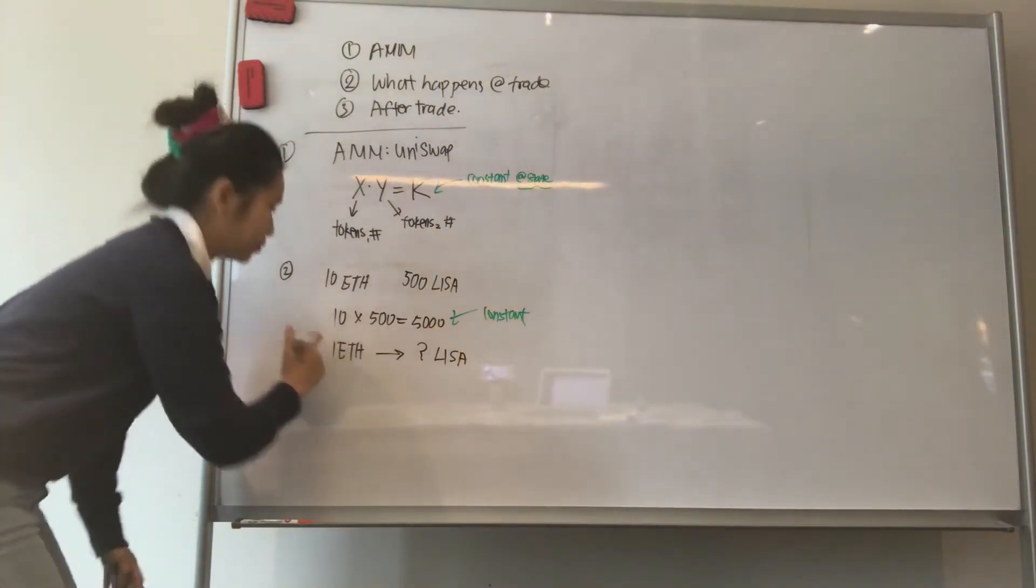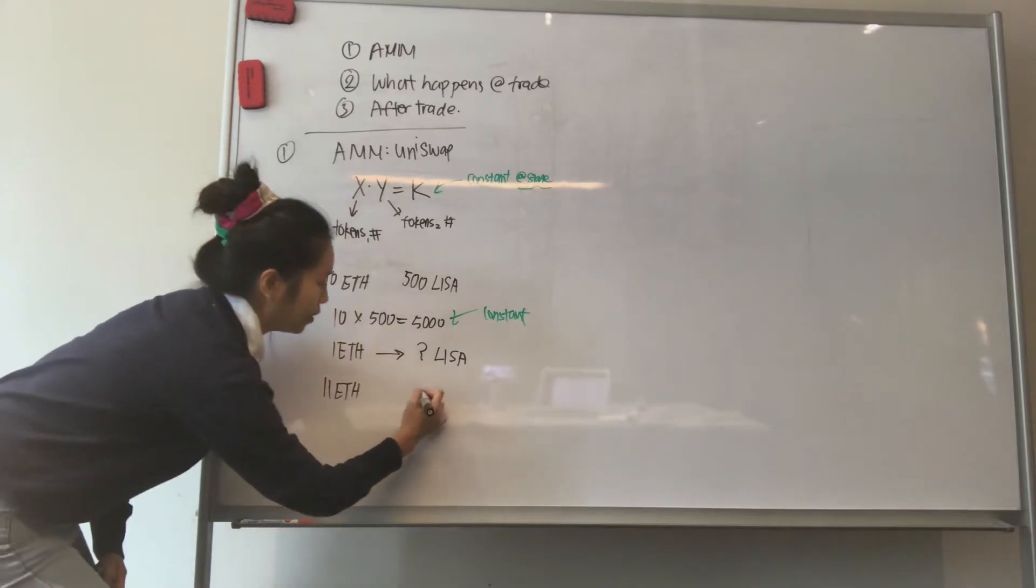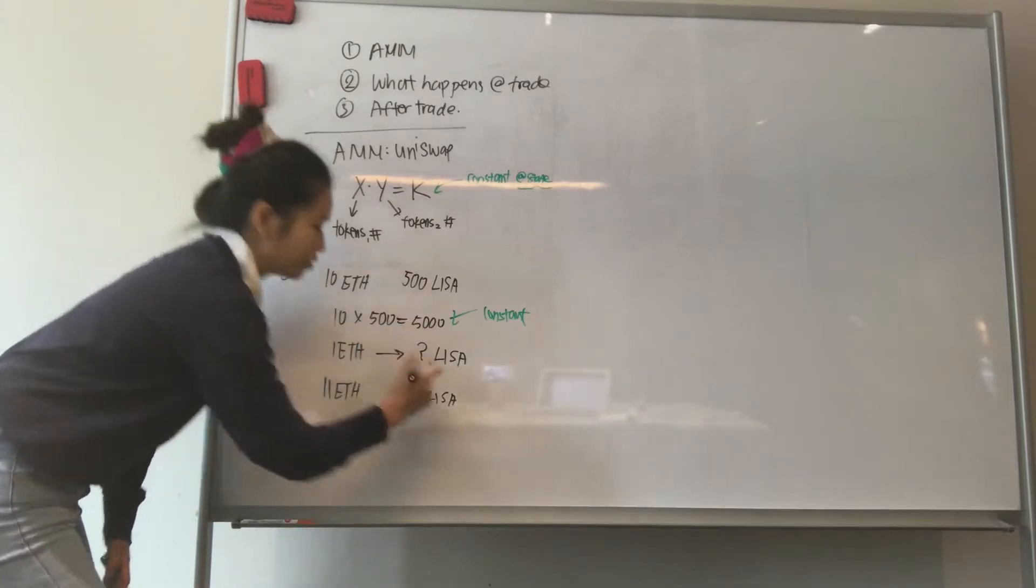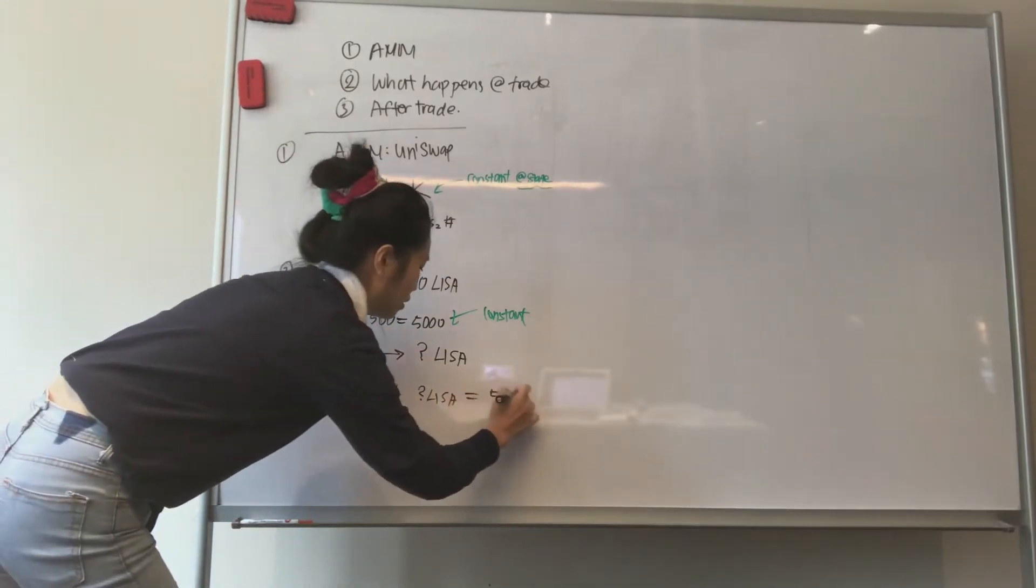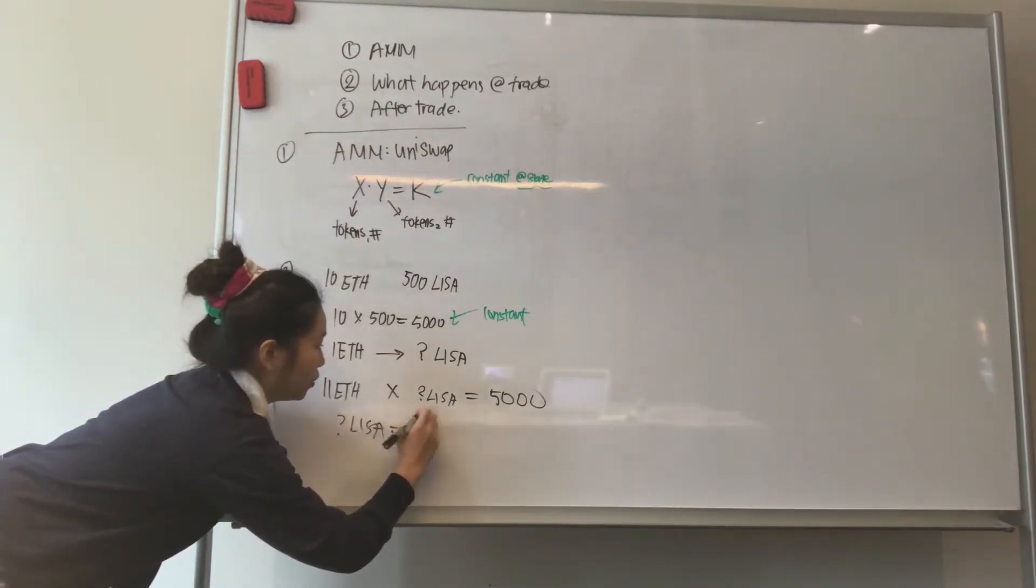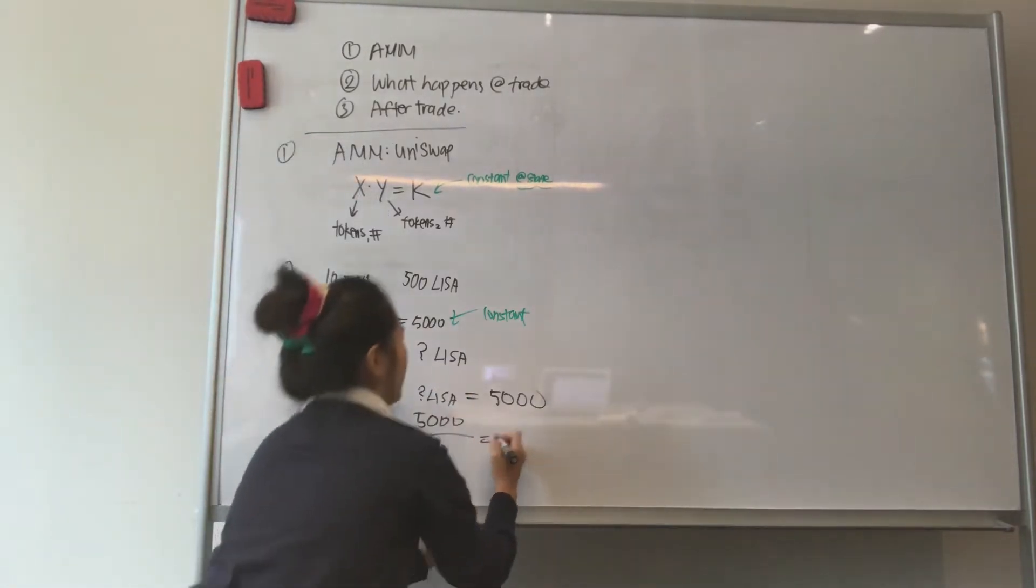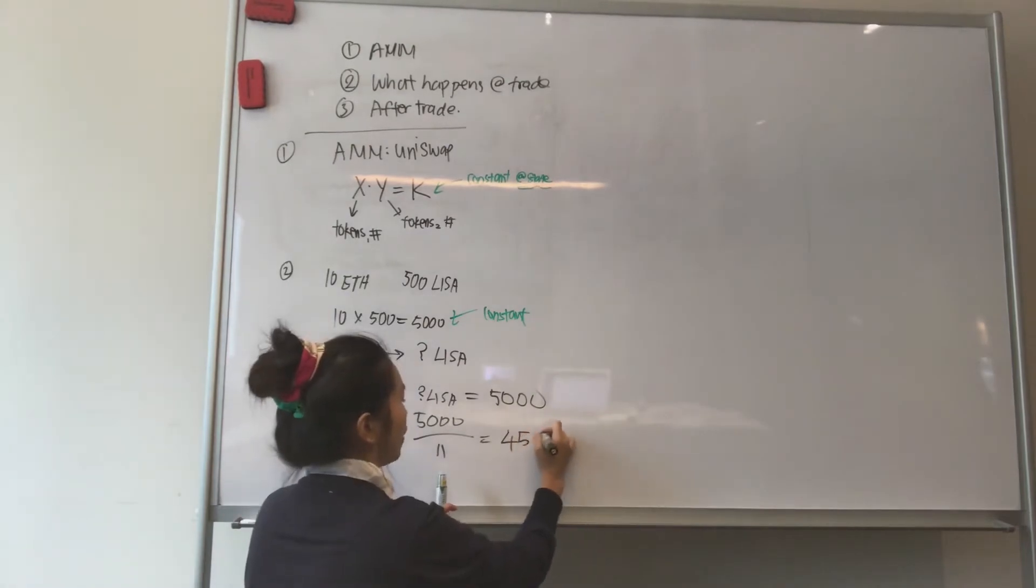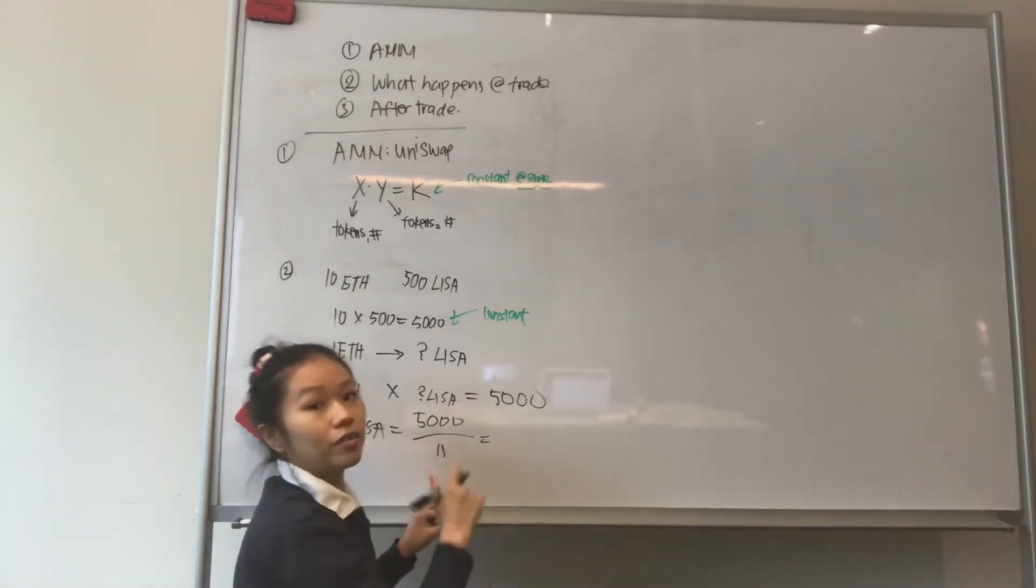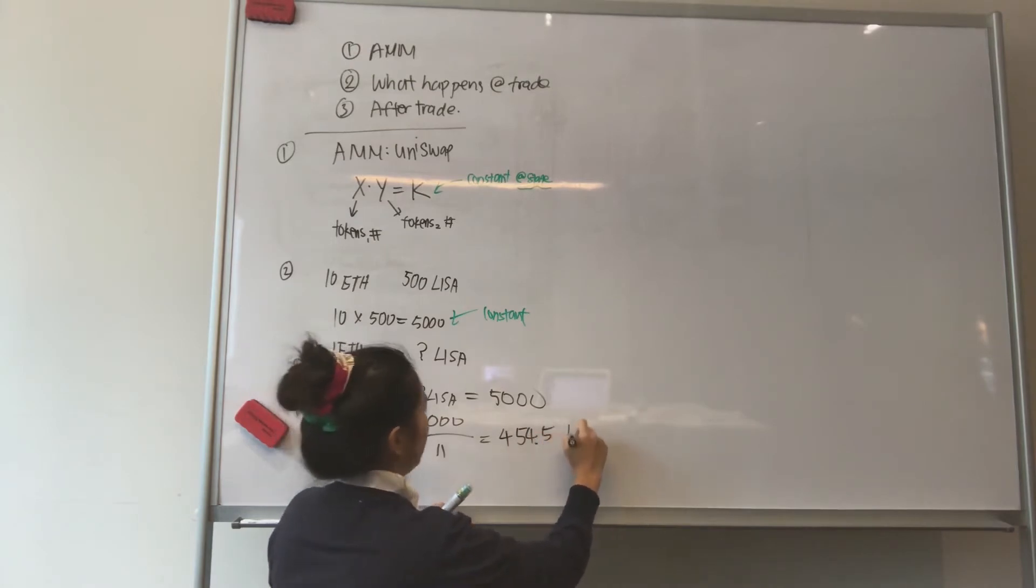How many ETH are we going to have now? We're going to have 11 ETH and then we're going to have an unknown number of LISA tokens. But we know that x times y always equals 5,000. Simple. How do we do this? So the unknown number of LISA tokens, we get 5,000 divided by 11, which is the new number of ETH now. We get 454.5 LISA tokens.